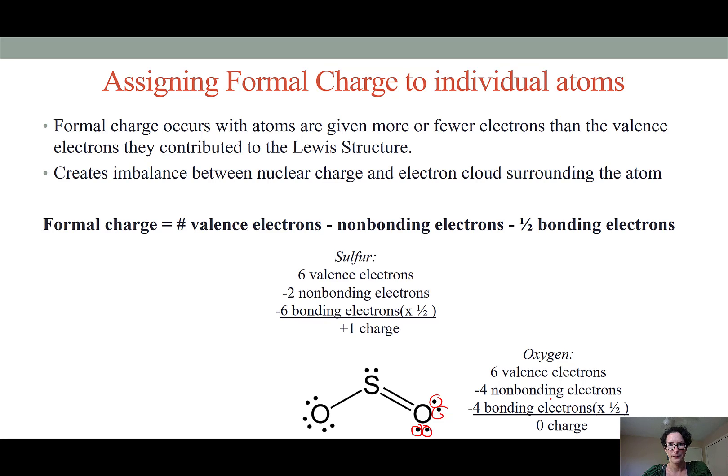Next let's look at the sulfur atom. Sulfur, like oxygen, is a group six element and has six valence electrons. In this structure we have only two non-bonding electrons on our sulfur. So we would subtract those out. From the three bonds that we see coming off of sulfur, there are six electrons involved in those bonds.